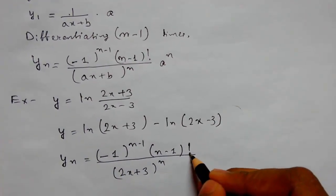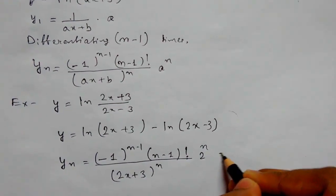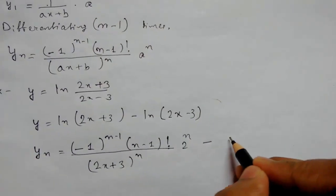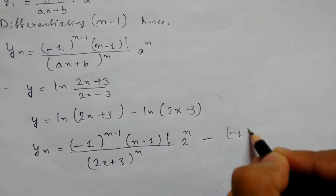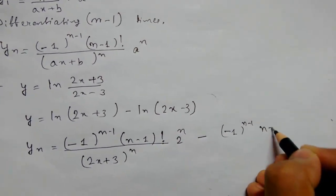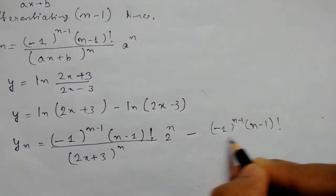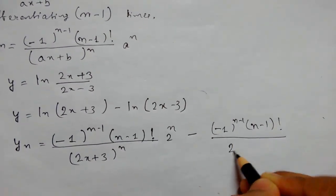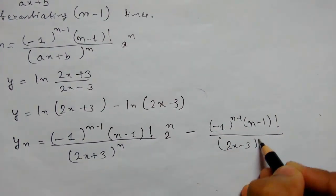For the second term it's the same: (-1)^(n-1) times (n-1)! over (2x - 3) to the power n.